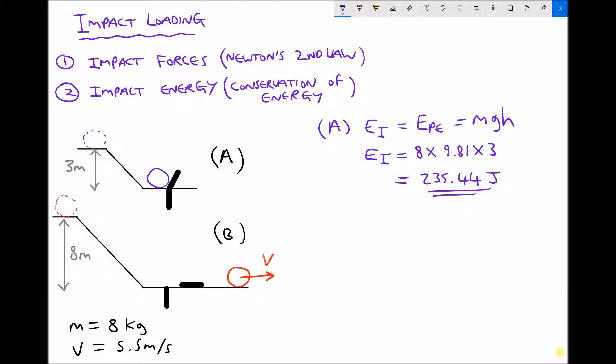So we know that that test piece can absorb 235.44 joules, but what we haven't determined yet is how much more it could have absorbed before it ruptured. This is where scenario B comes in useful because what we can see here is that our test piece hasn't absorbed all of the energy.